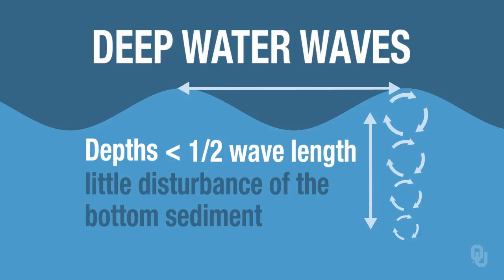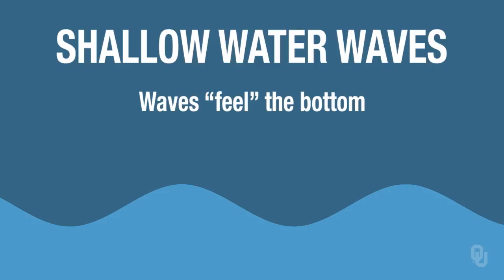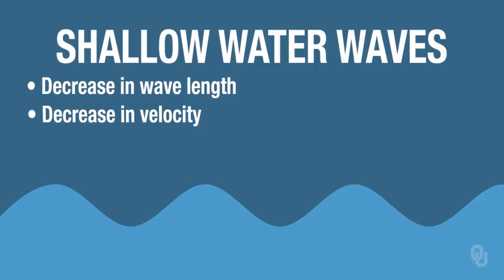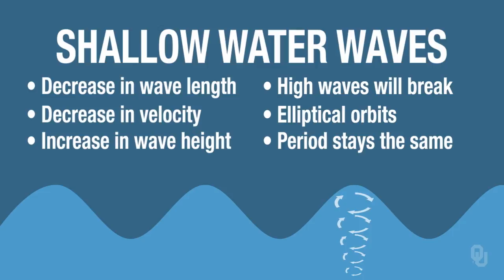However, when the depth becomes very shallow, you get into what are called shallow water waves, and the waves start to feel the bottom — they start to disturb the sediment at the bottom. You get a decrease in the wavelength, a decrease in the velocity of the wave, and an increase in wave height. When you increase the wave height, eventually the wave is going to break. The orbits change from circular to elliptical, but the period stays the same. That's what a shallow wave may look like — more elliptical orbits.